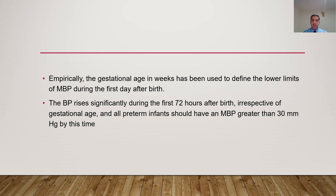All preterm infants should have a mean blood pressure greater than 30 mmHg by 72 hours of life. Remember this number: regardless of how extremely preterm the baby is, by three days of life the minimum accepted mean blood pressure is 30 mmHg. This does not necessarily mean we must treat every baby with a number less than this — we will address that later.